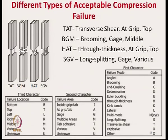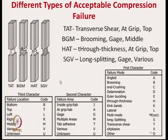Like tensile failure, compression failure can also be expressed by different terms using three characters: the first character shows the failure mode, the second character is the area of failure, and the third character is the location of failure.